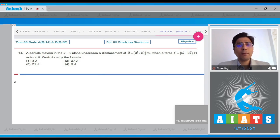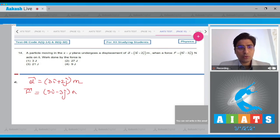In question 14, a particle moving in xy plane undergoes a displacement. So, the displacement d vector is given, that is 3i cap plus 2j cap meter, and the force is also given. The force is 5i cap minus 3j cap Newton. So, the work done has to be calculated.